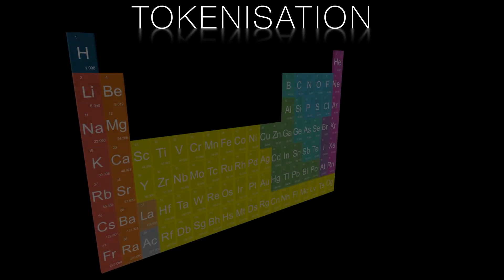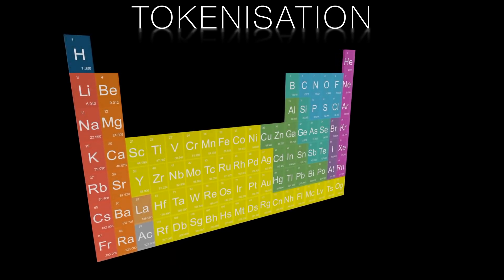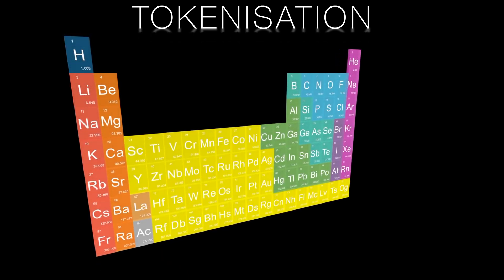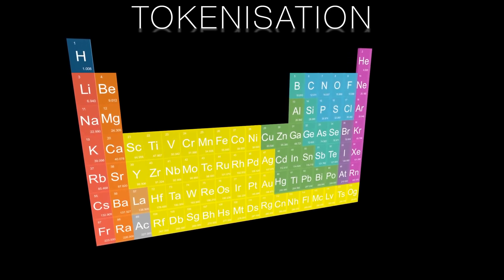So moving on to our third and crucial step in prompt engineering, we want to understand the difference between words and tokens. This is where we really start to see the power of AI in language processing. Think of it this way.